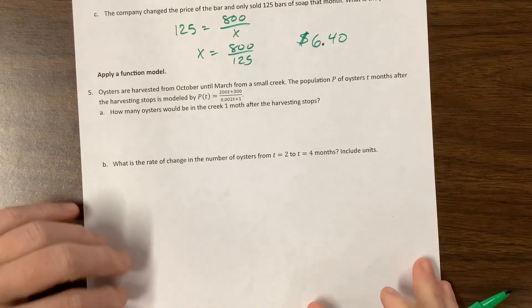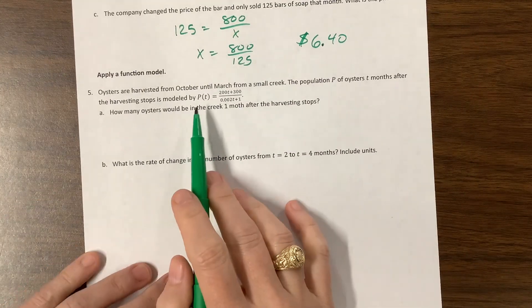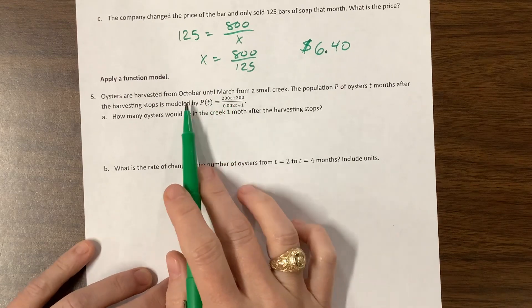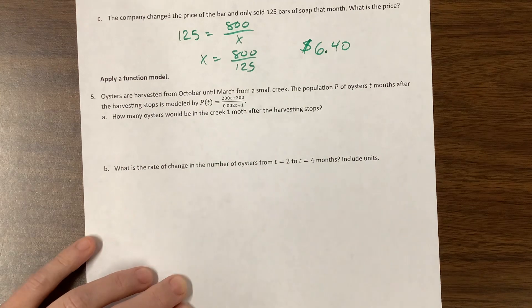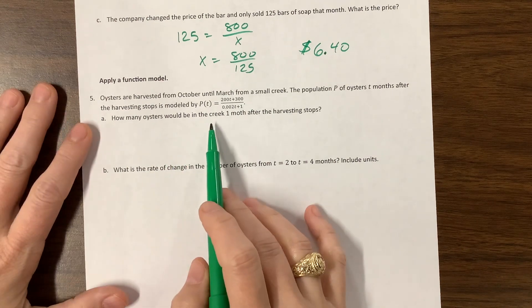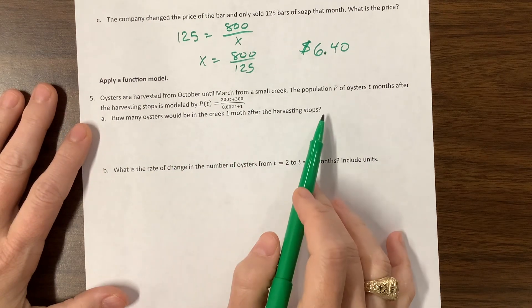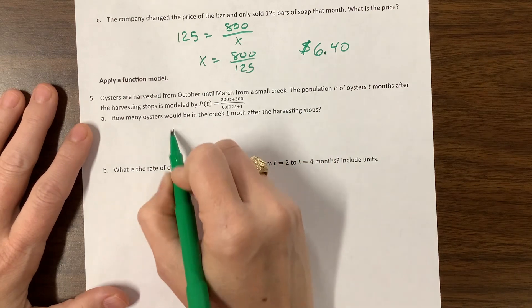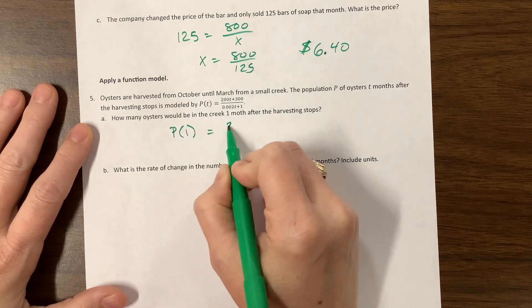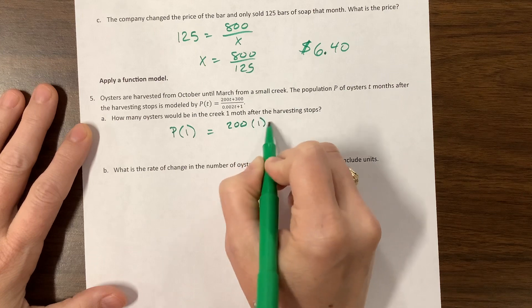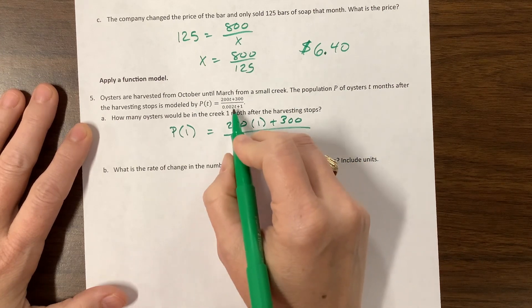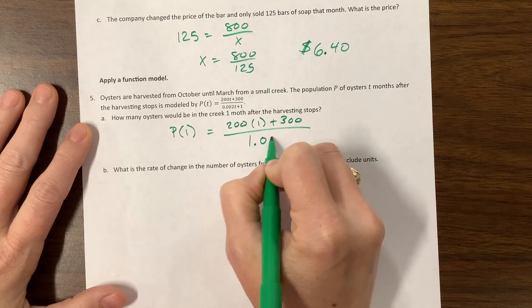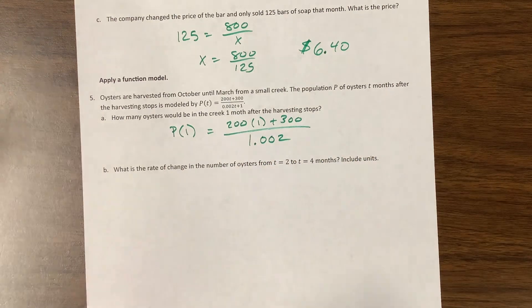Okay, the next one, they're giving us oysters are harvested from October to March, and then the population is given by this equation right here. So how many oysters would be in the creek one month after the harvest stops? So the population is P. So basically we just want to know P of one. Well, that's 200 times one plus 300 over, multiply that by one. It's one point. There are two zeros and then a two, I think.